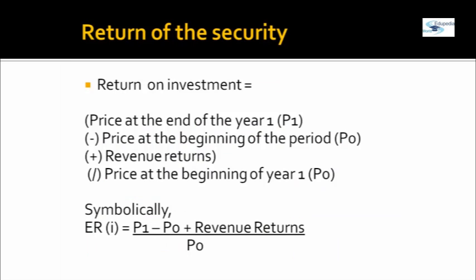To evaluate the return on a security: if the investor bought at Rs.100 and sold at Rs.120, the return is computed by adding the difference between the year-end price and the beginning price (Rs.120 minus Rs.100 = Rs.20), plus the dividend income during the year (Rs.10), giving Rs.30 earned on an investment of Rs.100, which is a 30% return. Symbolically, return on investment equals P1 (price at end of year) minus P0 (price at beginning of year), plus revenue return, divided by P0.